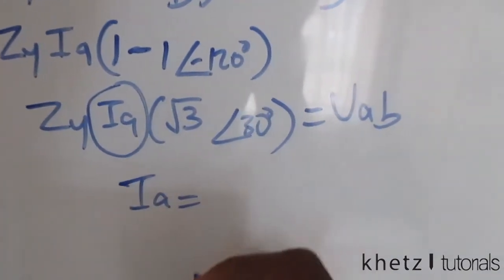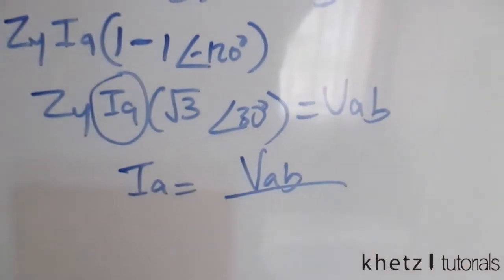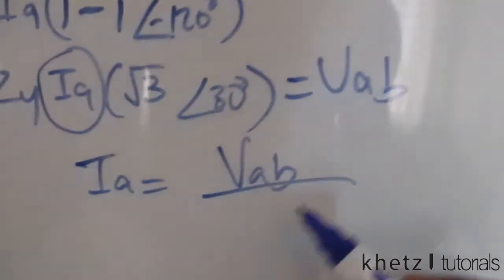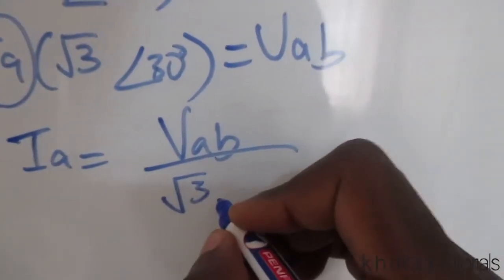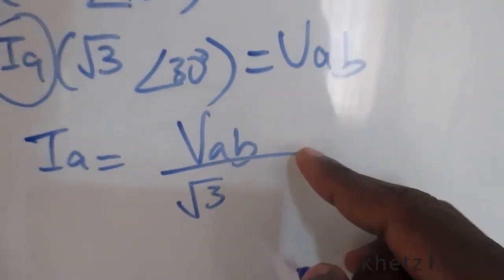This is basically what you're going to have. We're interested in finding this value, which is IA. So your IA is ultimately going to equal VAB divided by...